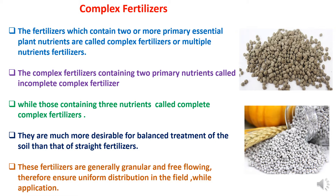Complex fertilizers containing only two primary nutrients are called incomplete complex fertilizers, and those containing three plant nutrients are known as complete complex fertilizers. Complex fertilizers are more desirable for balanced treatment of the soil in comparison to straight fertilizers, where only one nutrient is applied.